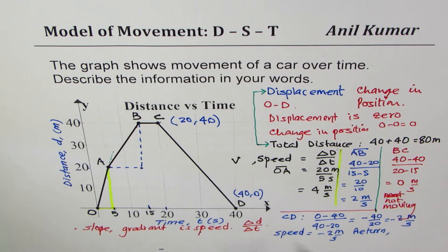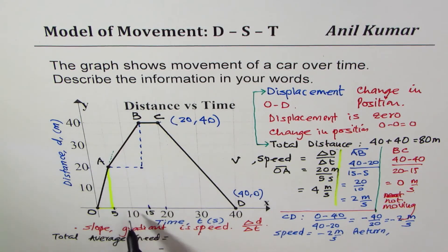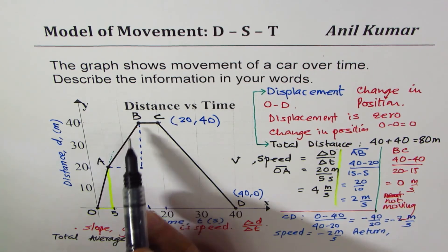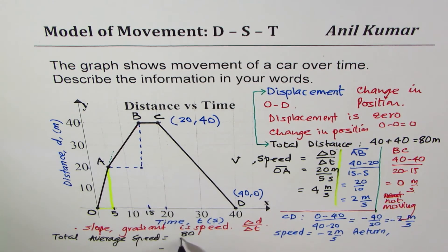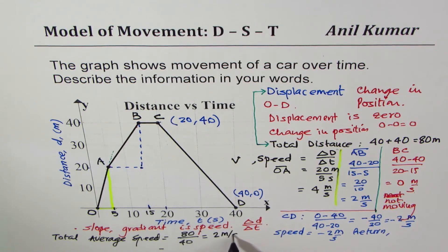From the graph we can also find the total average speed: total distance traveled is 40 going up and 40 returning, which is 80 meters, divided by total time taken which is 40 seconds. So average speed is 80 divided by 40 which is 2 meters per second.